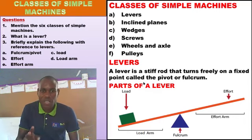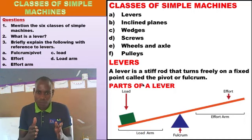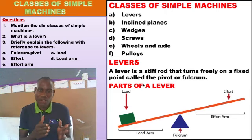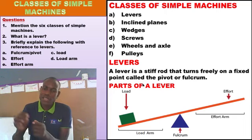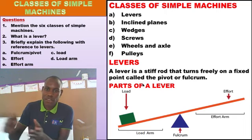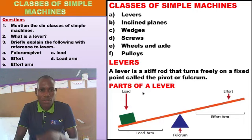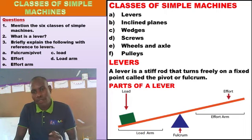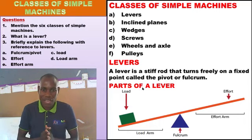The three major parts of a lever are: the load, the effort, and the fulcrum. There is also a distance from the load to the fulcrum, and a distance between the effort and the fulcrum. The distance between the load and the fulcrum is called the load arm, whereas the distance between the effort and the fulcrum is called the effort arm.